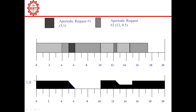At time instant 0, task A and task B are both in the queue. Task A has higher priority because it has the smaller period, so we schedule it from 0 to 4. At time instant 4, only task B is in the ready queue, so we start execution of task B from 4 to 5. We also check the server — it has capacity 1 but no aperiodic job has arrived yet, so the capacity remains the same until time 5.